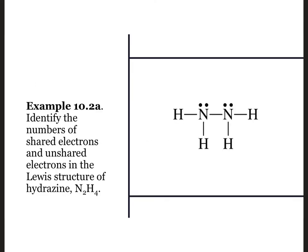How many shared and unshared electrons are in this Lewis structure of hydrazine? To count the shared electrons, we count all of the bonds. We have five single bonds containing two electrons each for a total of 10 shared electrons. Unshared electrons are the lone pairs. Two lone pairs with two electrons each give us four unshared electrons.